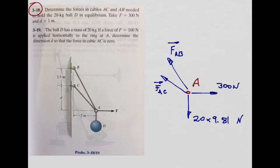One way to think about this is: to isolate point A, imagine using a scissor to cut the cables — cutting the cable holding the ball, and cutting all the other cables. When you cut the cables, you are doing the free-body diagram, and you need to include the forces in the cables, which are internal forces in the cables. These are all the forces we have.